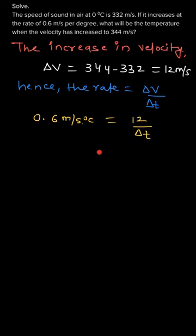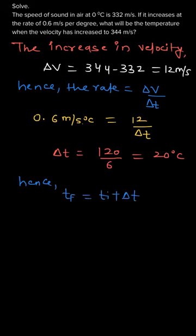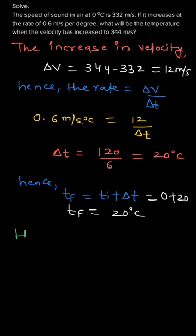From this, if we simplify, we get the value of ΔT which comes out to 20 degrees Celsius. Hence, the final temperature is calculated as T_initial plus ΔT — that means the initial temperature plus the increase in temperature. The initial temperature was 0 degrees Celsius and the change in temperature is 20 degrees Celsius, so it would be 0 plus 20.